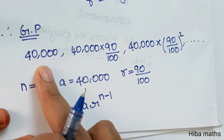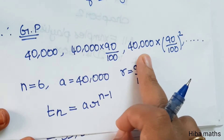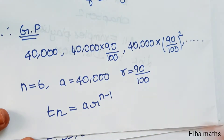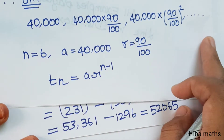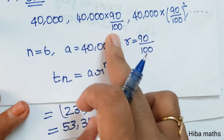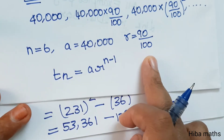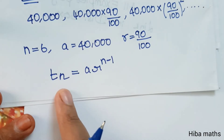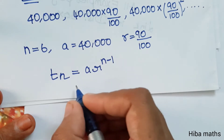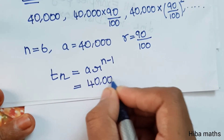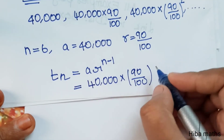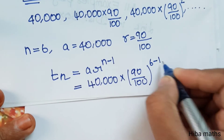Here, n value is 6 years, A is 40,000, and R value is 90 by 100. The formula for T(n) is A into R to the power (n−1). So A value is 40,000, R value is 90 by 100, and n value is 6, so n−1 equals 5.